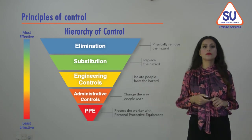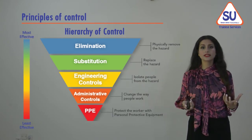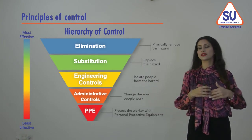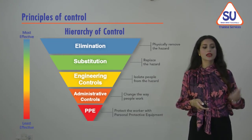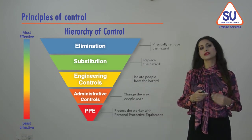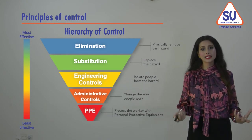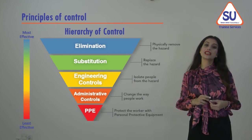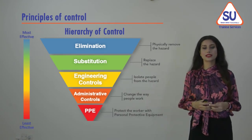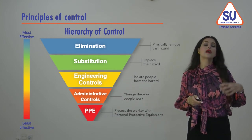A common control measure is engineering controls — practical, allowing employers to be innovative and creative. Examples include physical barriers, guards, sensors, and alarms. Then we have administrative control measures or safe systems of work, such as permit-to-work systems and risk assessments. Finally, the least effective control measure is personal protective equipment (PPE). While widely used, PPE on its own is not an adequate control measure due to its many limitations.